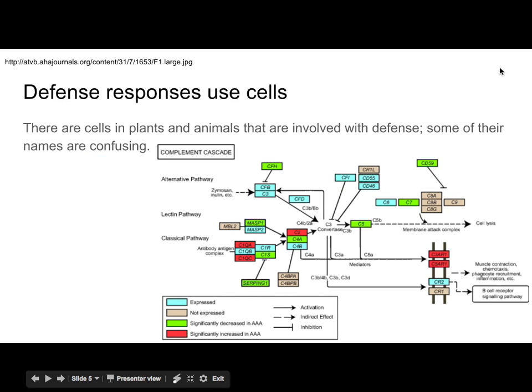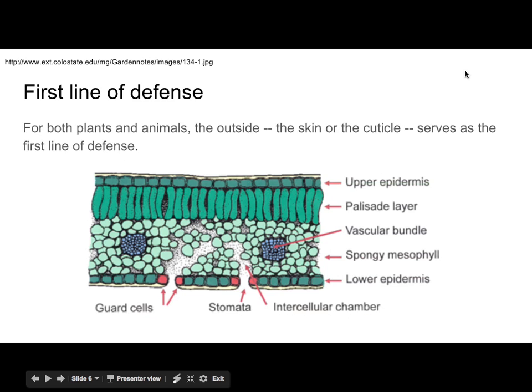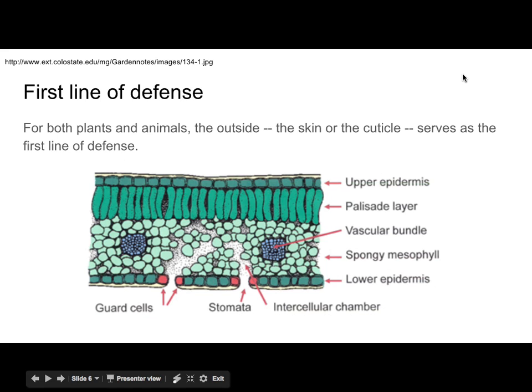Virtually all forms of defense will involve a cell in some way, shape, or form. The ways these things work are either very straightforward or insanely complicated. The goal is not to become a walking, talking expert in plant or animal defense. In either case — plants or animals — the first line of defense is the skin. If you can't get into the organism, you can't make it sick. Whether we're talking about the skin of an animal or the cuticle, which is the outer layering of a plant, both serve as the first line of defense.